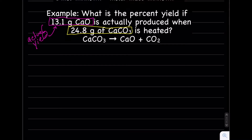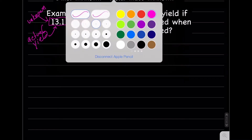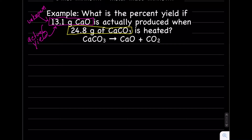That 13.1 grams of CaO is our actual yield. It's also going to be part of our unknown because we're going to figure out what we think in theory is going to be produced — the product calcium oxide. While that's our actual yield, it's also our unknown, because we're going to compare what should have been produced in the perfect world, our theoretical yield, with the actual yield, what was actually produced.